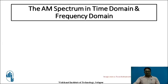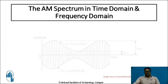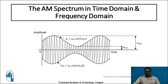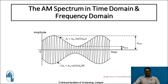The AM spectrum is shown in both time domain and frequency domain. In the time domain waveform, the upper envelope is given by AC + AM·cos(2π·FM·T) and the lower envelope carries a negative sign with the same equation. The highest part of the envelope is denoted by Amax or Vmax and the lowest part by Amin or Vmin, as the amplitude corresponds to the respective voltage of that frequency signal.